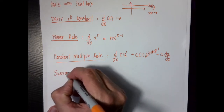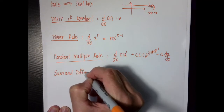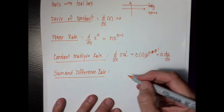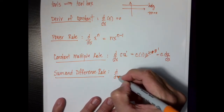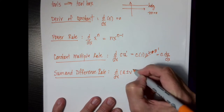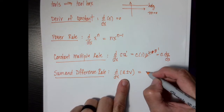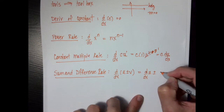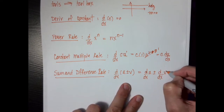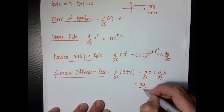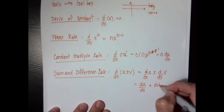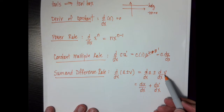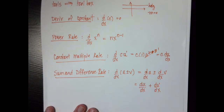The sum and difference rule is basically like the limit of a sum or the limit of a difference. If I have the derivative of u plus or minus v, then it's going to be d/dx of u, plus or minus the derivative of v — written as du over dx, plus or minus dv over dx. Notice that I'm paying close attention to my variables and making sure that they match.